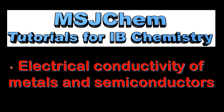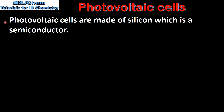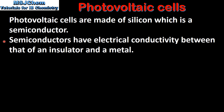This is MSJChem. In this video I'll be looking at the electrical conductivity of metals and semiconductors. Photovoltaic cells are made of silicon which is a semiconductor. Semiconductors have electrical conductivity between that of an insulator and a metal.